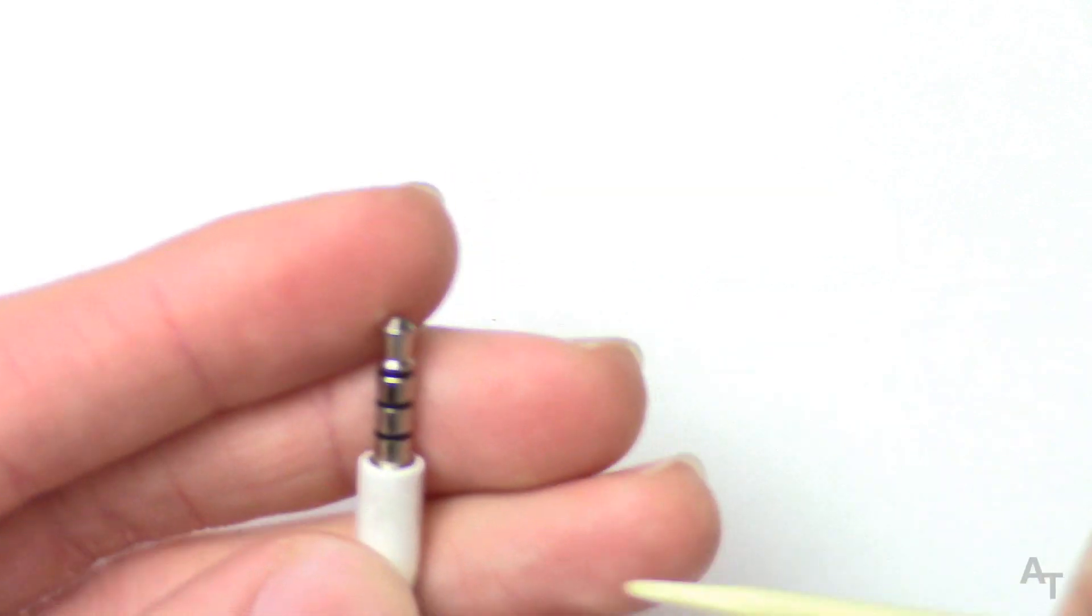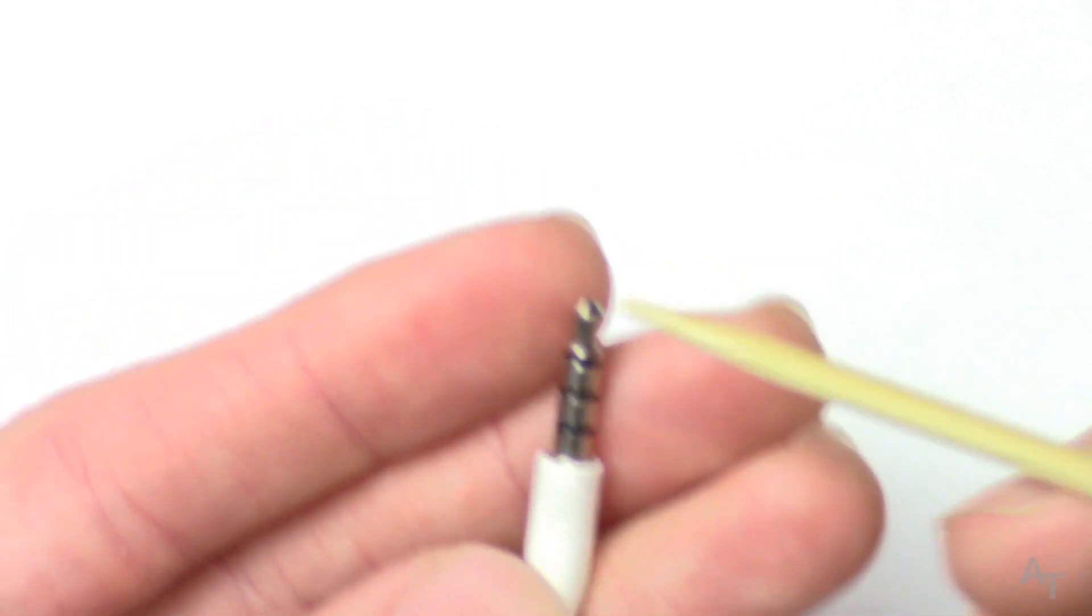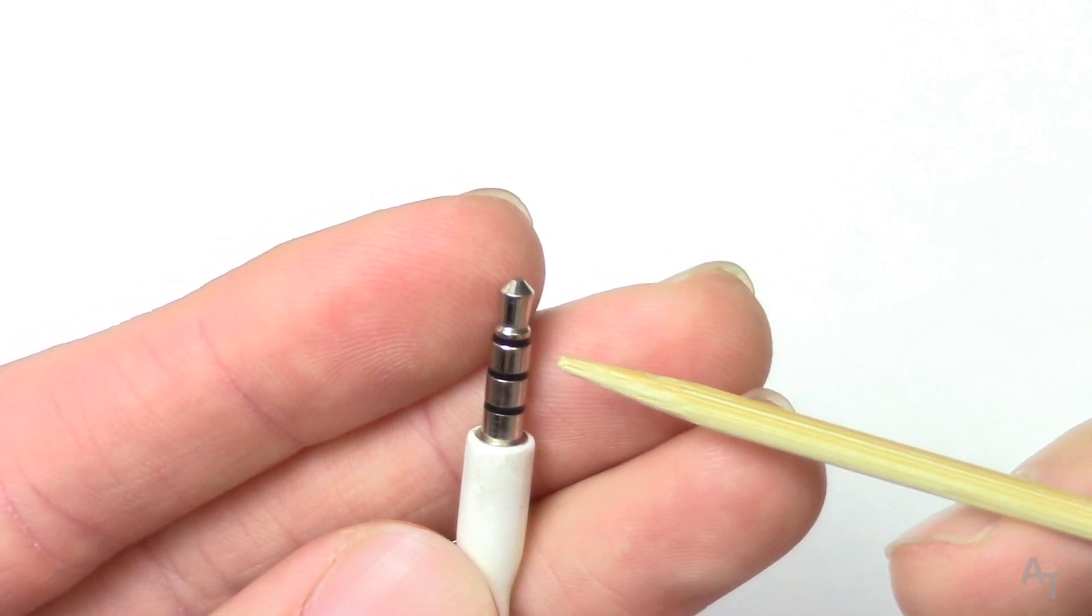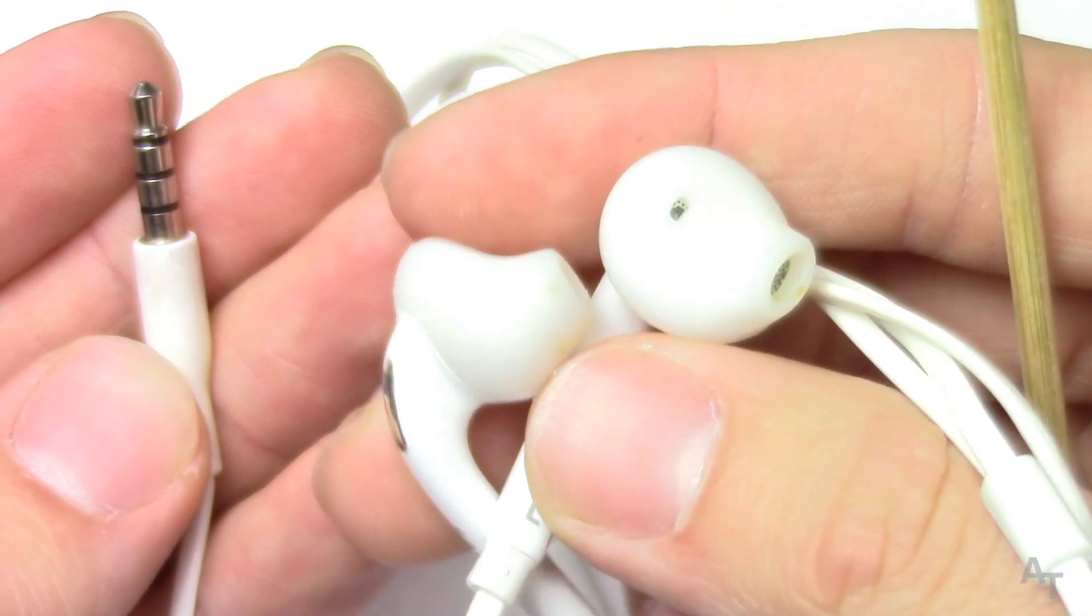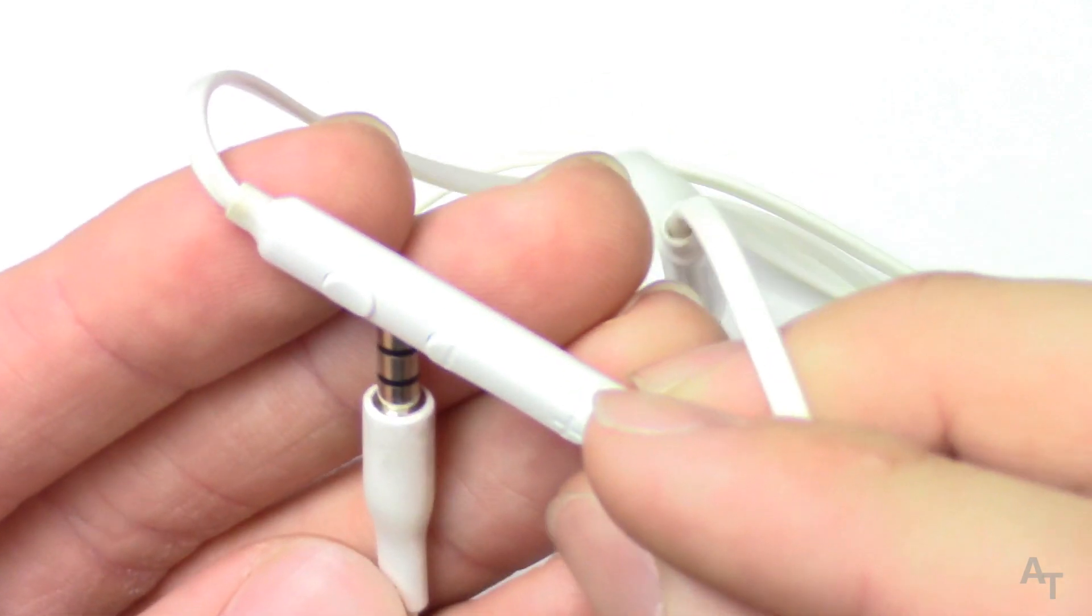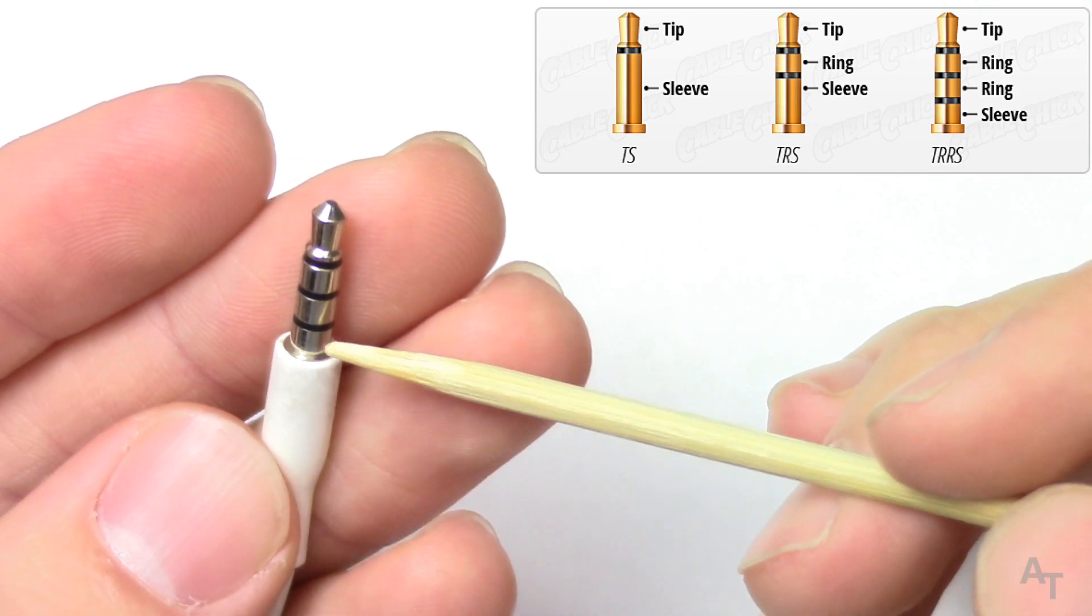This is what's called a TRS jack. This is a 3.5 millimeter headphone type jack. This came off of a set of Samsung earbuds here, and these earbuds have this microphone.